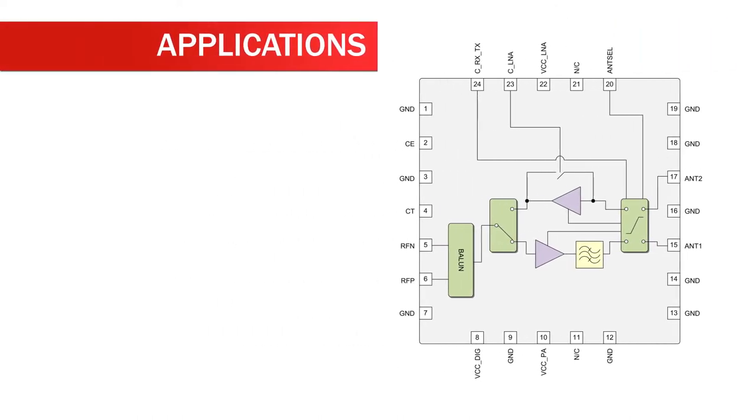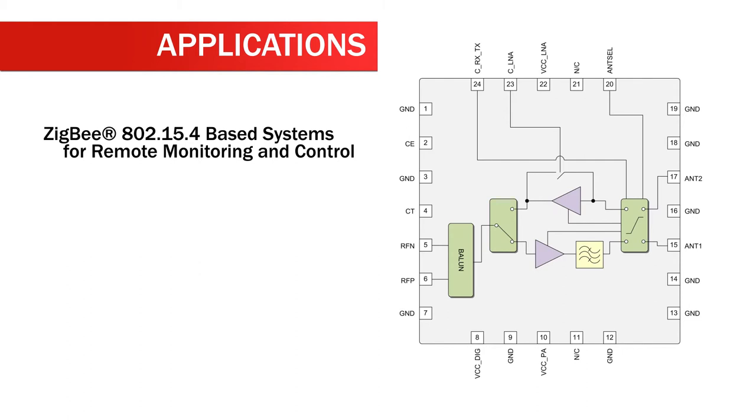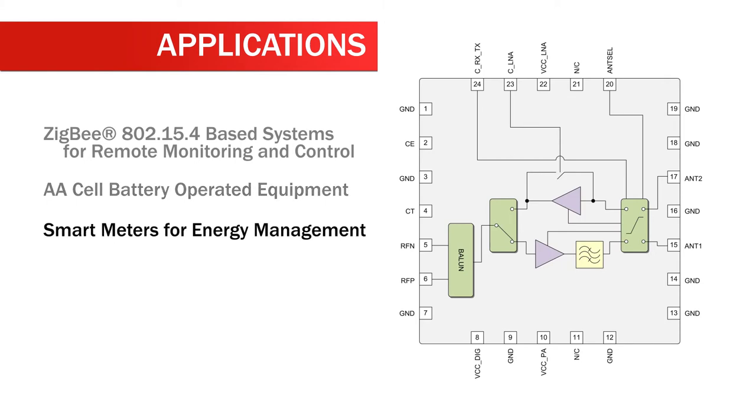Applications of the RF 6555 include Zigbee 802.15.4 base systems for remote monitoring and control, AA cell battery operated equipment, and smart meters for energy management.